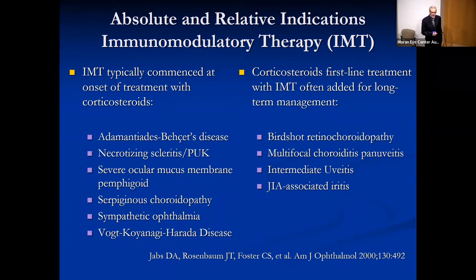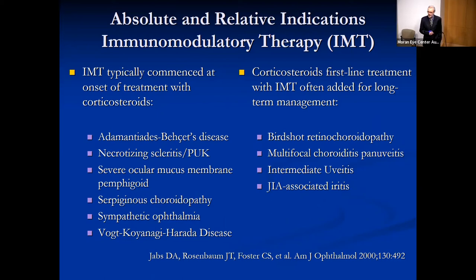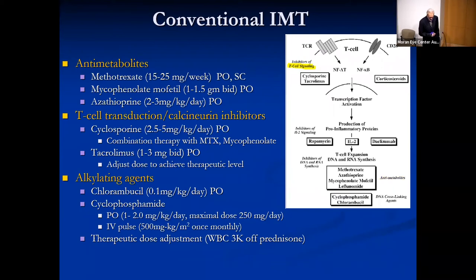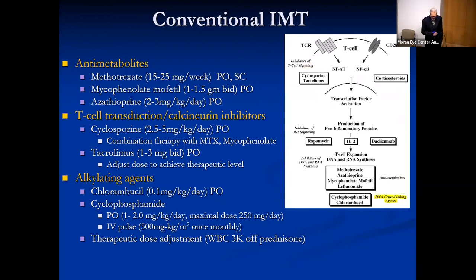Immunomodulatory therapy was also recommended for ocular-only inflammatory diseases including mucous membrane pemphigoid, serpiginous choroidopathy, sympathetic ophthalmia, and VKH. Early institution of immunomodulatory therapy is recommended for eyes known to respond poorly to steroid monotherapy, such as birdshot retinochoroidopathy, certain cases of multifocal choroiditis, intermediate uveitis, and JIA-associated uveitis. Conventional agents include antimetabolites — methotrexate, mycophenolate, and azathioprine — T-cell transduction or calcineurin inhibitors such as cyclosporine and tacrolimus, and alkylating agents of chlorambucil and cyclophosphamide, which are used less frequently now that biologics are available.